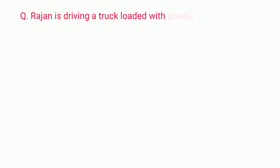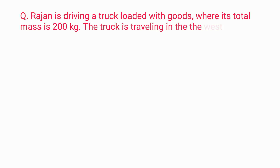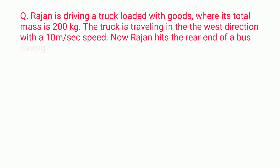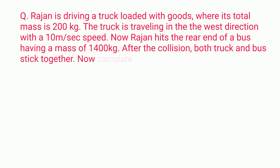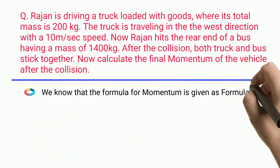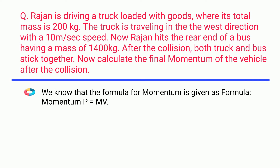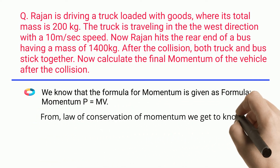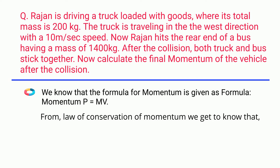Problem: Rajan is driving a truck loaded with goods where the total mass is 200 kg. The truck is traveling westward at 10 m/s. Rajan hits the rear end of a bus having a mass of 1400 kg. After the collision, both the truck and bus stick together. Calculate the final momentum of the vehicles after the collision. Using the formula p = mv and the law of conservation of momentum: p initial equals p final.